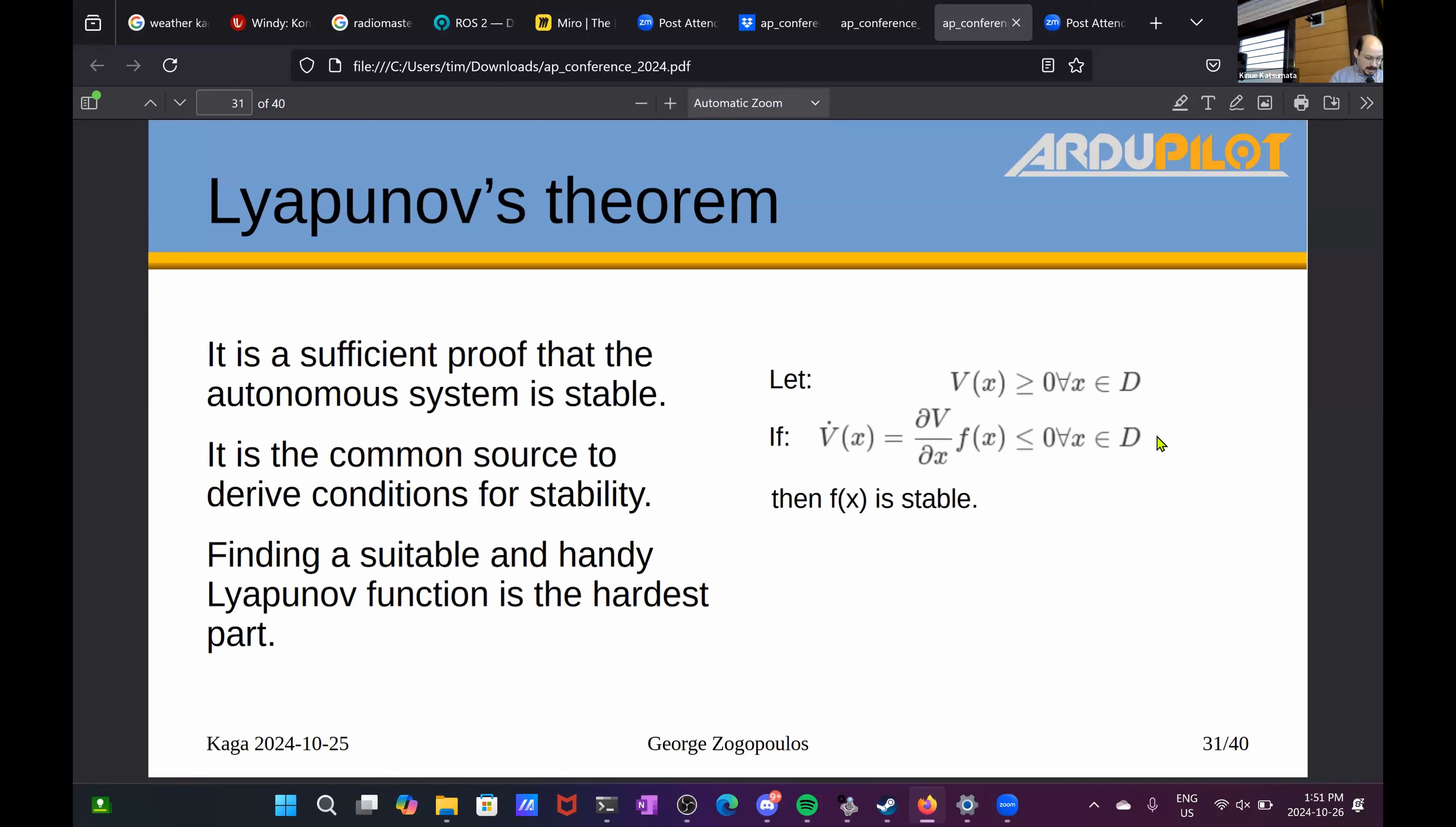And at this point, we can apply the core of today's analysis. This is the so-called Lyapunov's theorem. And it is a sufficient condition that proves that the autonomous system that we have at hand is actually stable in the Lyapunov sense. The proof comes down to finding a function, an arbitrary function V of the state, that needs to be positive everywhere on the domain that we care about investigating. And its derivative needs to be negative everywhere on the domain that we care to investigate. And if those two things happen and we find V that satisfies those two conditions, then we can guarantee that our autonomous system is stable.